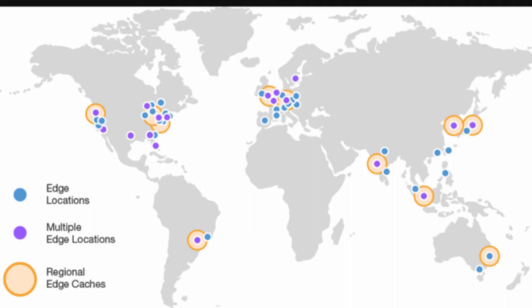I have a map of the world here and you can see a load of little dots. On the left it says edge locations and multiple edge locations. Now there are going to be a few new phrases here because AWS are really good at coming up with alternative names for things that are kind of normal. So an edge location is just a data warehouse — it's just a place where a bunch of servers are.